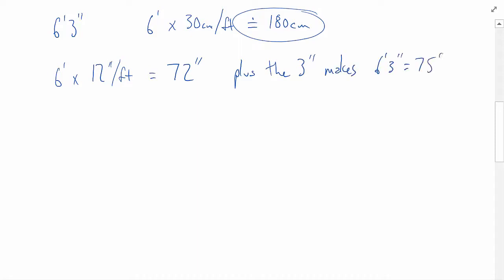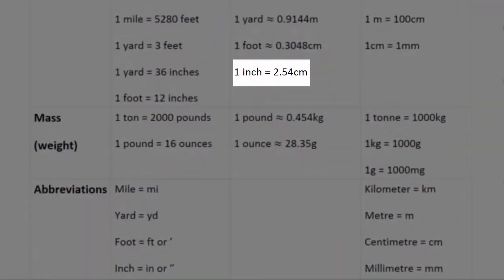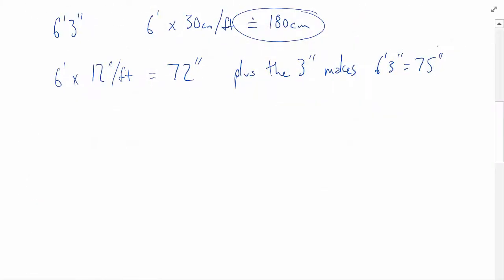And now we can convert 75 inches into centimeters by using the appropriate reference that we have in the chart. It says in the chart that 1 inch is equal to 2.54 centimeters. We're going to use this to make a ratio that we will multiply with the 75 inches. Since every 1 inch is the same as 2.54 centimeters, and every 2.54 centimeters is the same as 1 inch, we could either say 1 inch over 2.54 centimeters, or 2.54 centimeters over 1 inch. Both of those are proper ratios, but how do we decide which one to use?